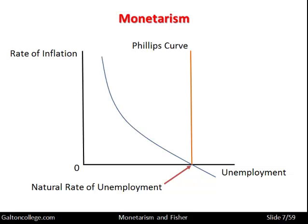According to monetarist economists, it's far worse than this, because the Phillips curve is not a trade-off — it's not the blue curve line we've got here. In fact, it's the vertical red line. Because if the government attempts to reduce unemployment below the natural rate, then inflation will start to rise. Say the government tried to reduce unemployment to a lower level — as you can see, there is inflation.